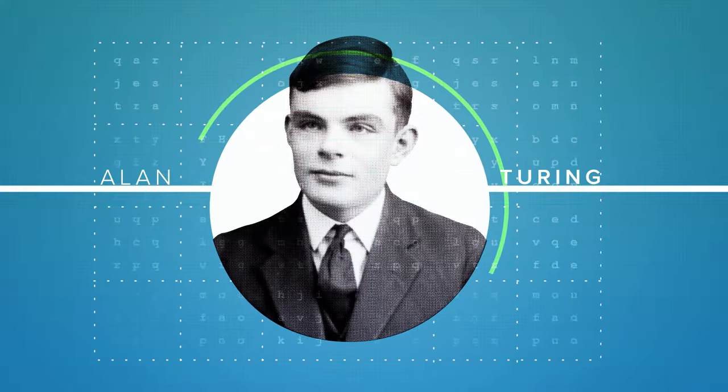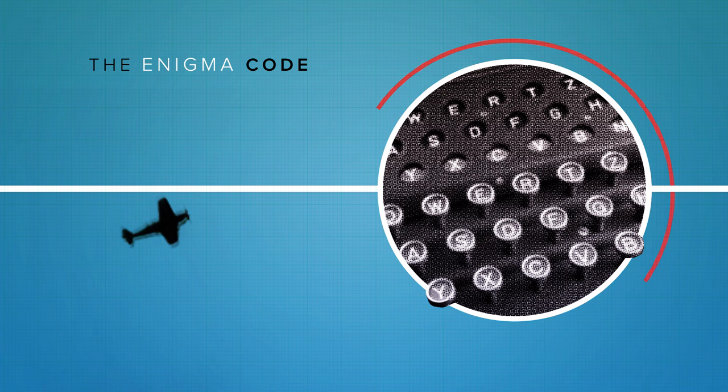You may have heard of Alan Turing, the father of computer science and the mathematical genius who cracked the German Enigma code during World War II, a feat that Winston Churchill once remarked was the secret weapon that won the war.